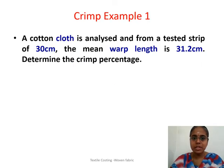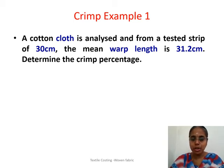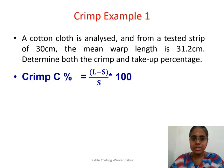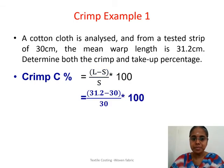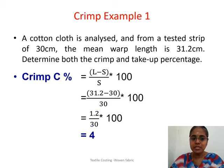Let us understand crimp with an example. There is a cloth analyzed for crimp. The length of the cloth is 30 cm and the warp thread taken out of it is found to be 31.2 cm. We have to determine the crimp percentage. The formula is C = (L − S) / S × 100. So: (31.2 − 30) / 30 × 100 = 1.2 / 30 × 100 = 4. The crimp percentage is 4%.